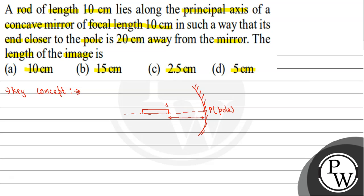The first end — the one closer to the mirror — has a distance of 20 centimeters from the mirror. The rod's length is 10 centimeters. So the second end's distance from the mirror will be 20 plus 10, that is 30 centimeters. We need to find the length of the image. The focal length f is given as 10 centimeters.